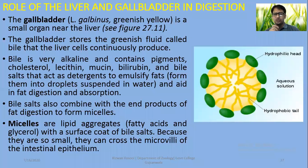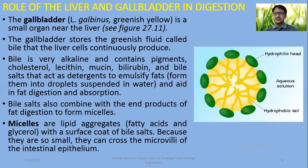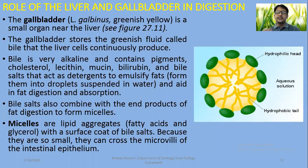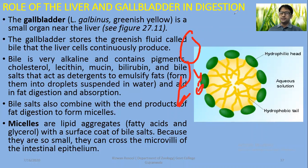Bile is very alkaline and contains pigments, cholesterol, lecithin, phospholipids, mucin, and bilirubin — derived from the breakdown of red blood cells. Bile salts act as detergents to emulsify fats, breaking larger fat droplets into smaller fat droplets — a process called emulsification.